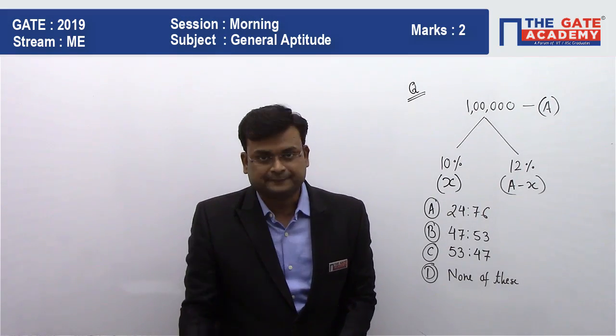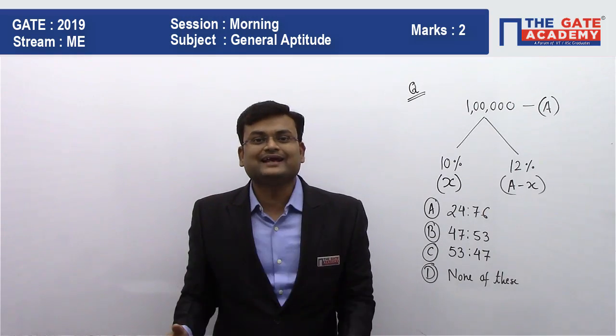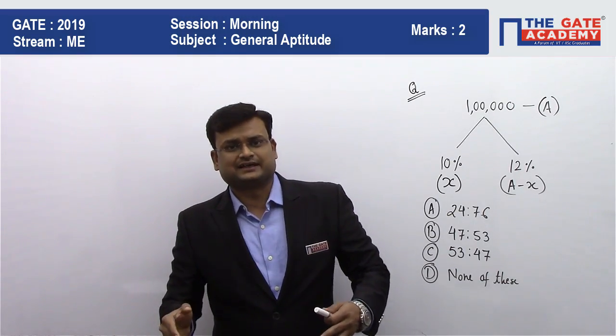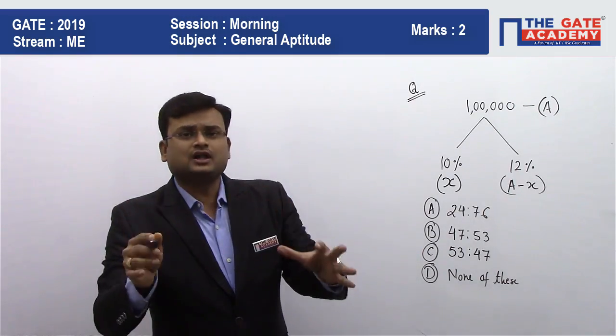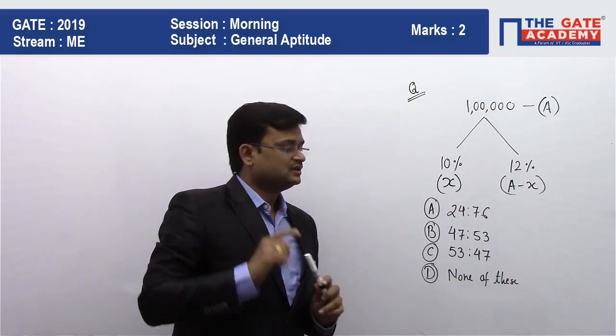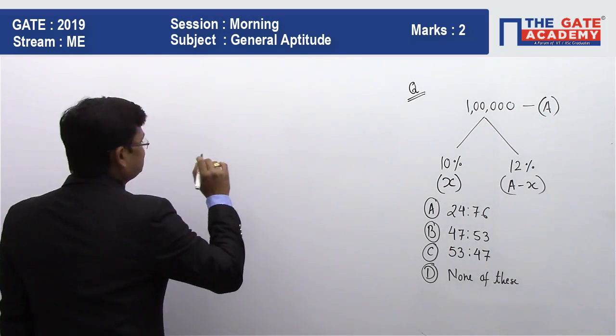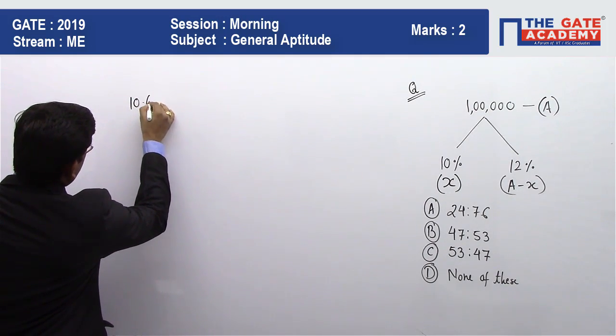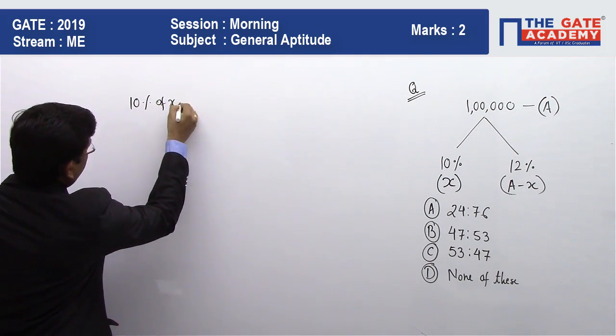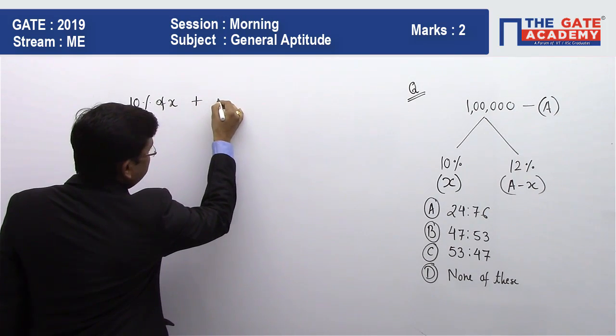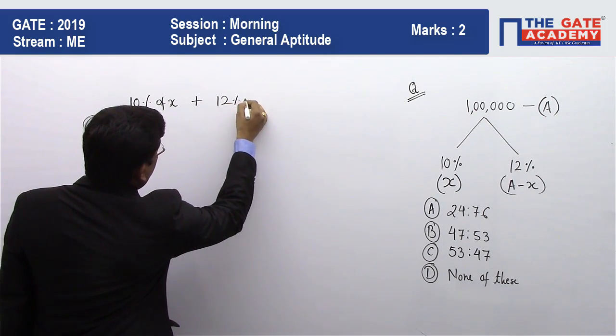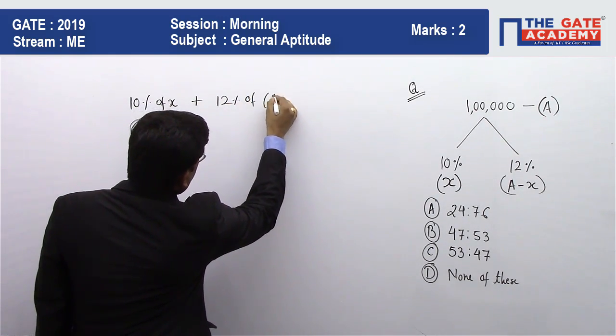So you write 10% of X plus 12% of A minus X. This is my total earning.